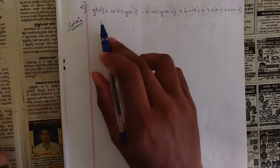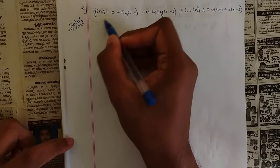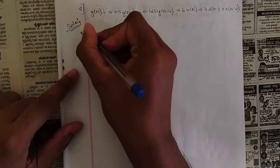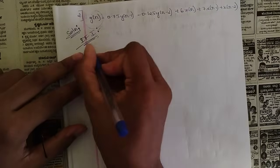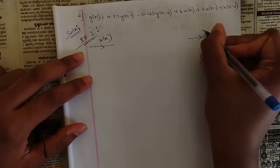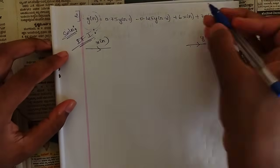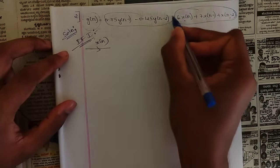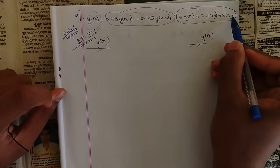In this problem, they have already given y(n) on one side and all remaining terms on the other side, so we can directly write the DF1 structure. The DF1 structure consists of input x(n) and output y(n). First draw those, then group all the x(n) terms. The x(n) terms include x(n), x(n-1), and x(n-2), and the y(n) terms are separate.